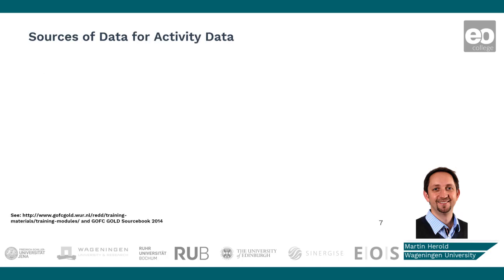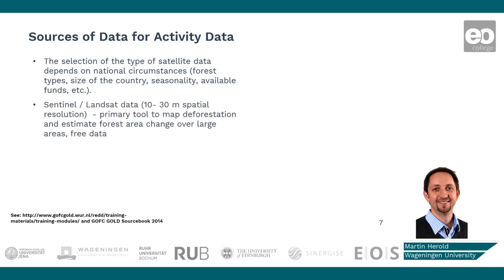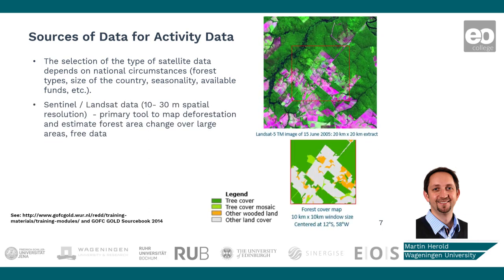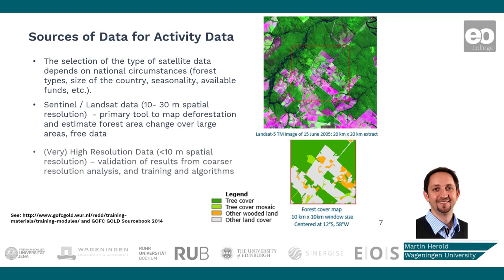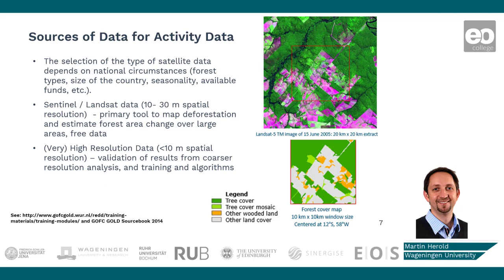Earth observation data for estimating activity data most commonly use Sentinel and Landsat time series data, at a spatial resolution of around 10 to 30 meters, which are available for historical periods. Good historical coverage is needed to provide estimates of changes. When using mapping results for stratified area estimation, you can also use very high resolution data or visual interpretation of very high resolution data — from sources such as Planet — to validate results and estimate area. Almost all REDD+ tropical countries use a combination of Landsat, Sentinel, and high resolution data to estimate activity data for forest changes.